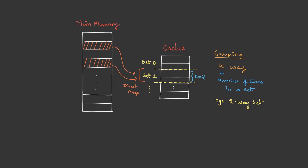The mapping from main memory to set is direct mapping, and inside the set the mapping is associative. So basically, set associative is a combination of these two. The advantage is that associative mapping is only applied within a set, and you can clearly see the number of lines inside a set is only 2. Therefore the number of comparisons will be less — the search is drastically reduced, restricted to just those two lines.